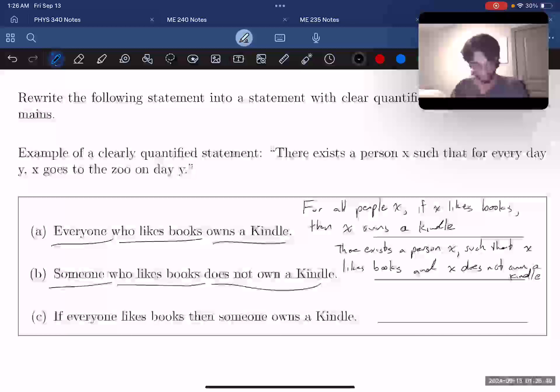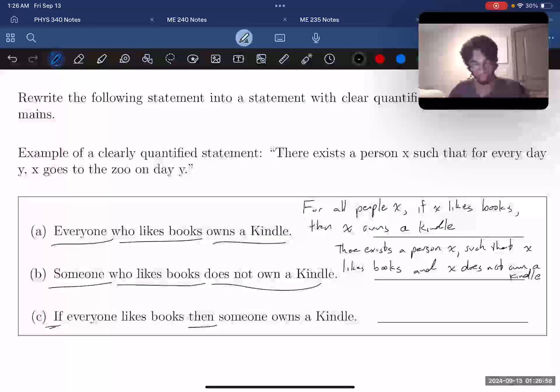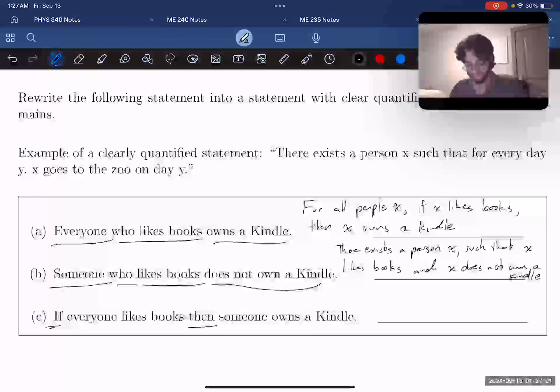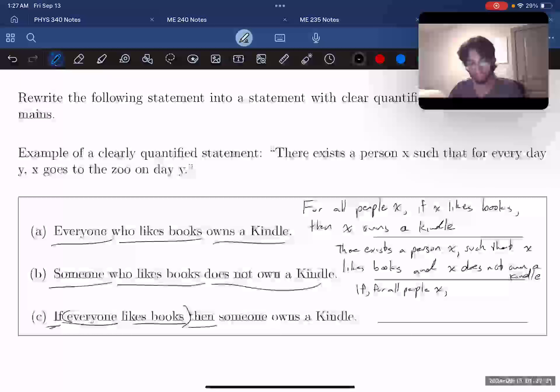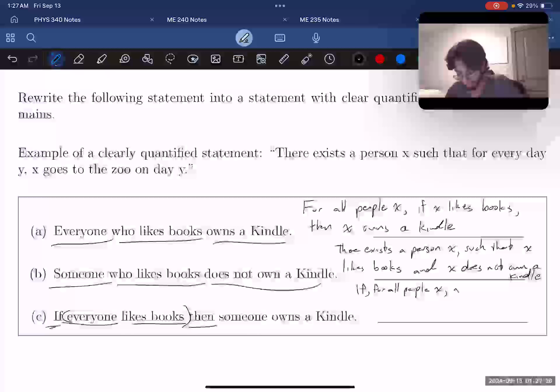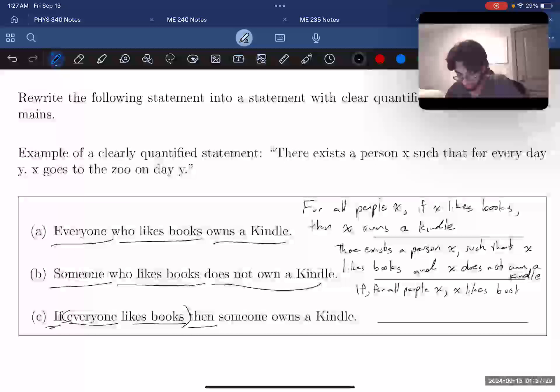And then finally, for Part C, we have an if-then statement with everyone. So our if-then means that somewhere here we're going to have an implication. So we can start by just saying if, and then somewhere down the line we'll say then. So let's look at the statement inside the if. We're saying everyone, which means all people X. So if for all people X, if everyone likes books, that means that all these X people like books. So if for all people X, X likes books...